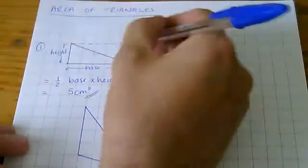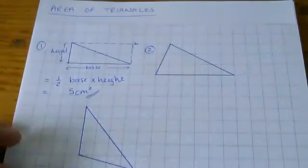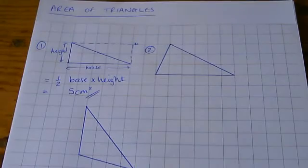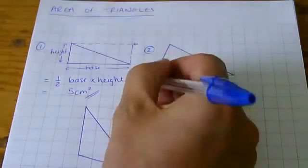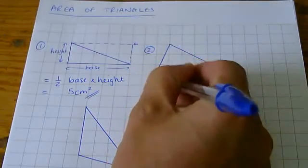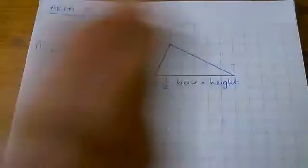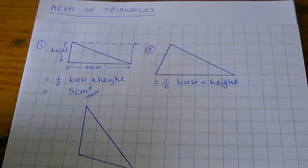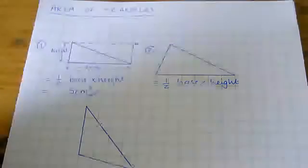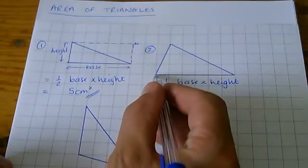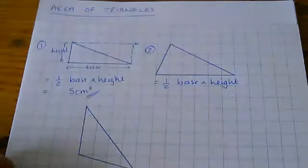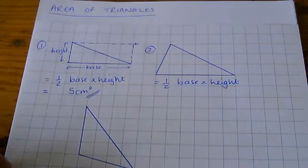Let's have a look at this one here, the second one. We want to do half the base multiplied by the height. Now, when you're using this formula, it's important that you know the length of the base of the triangle, and it's also important that you know the height of the triangle.